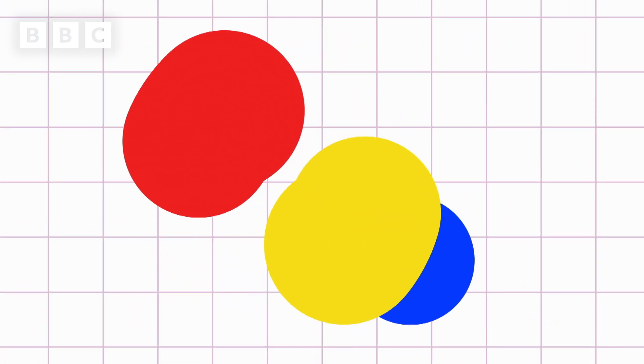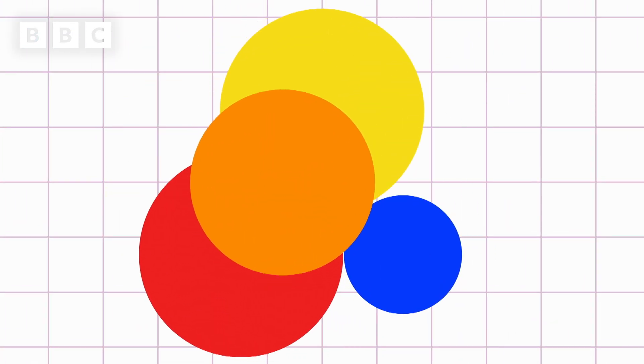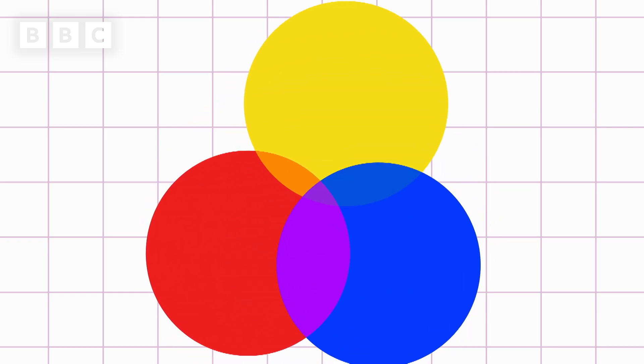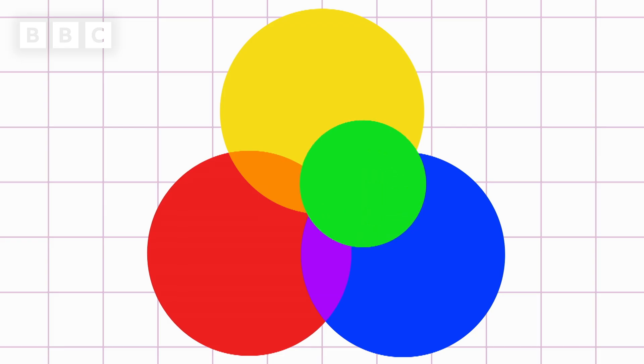When we mix red and yellow together, we make orange. When we mix red and blue together, we make purple. And when we mix blue and yellow together, we make green.